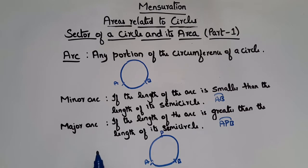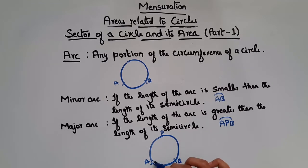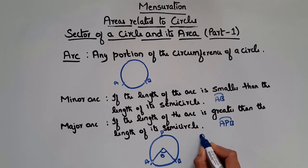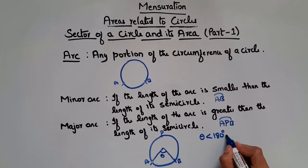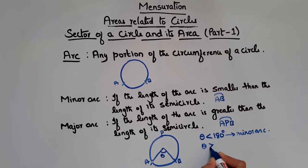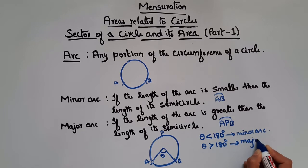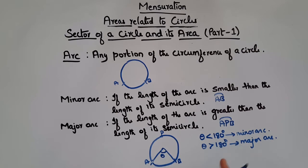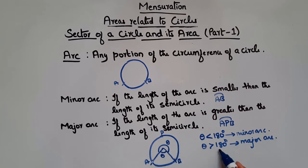This minor arc and major arc can also be defined in terms of theta, where theta is the angle subtended by an arc at the center. If you see arc AB, the angle subtended at the center is this angle. So if theta — the angle subtended by the arc at the center — is less than 180 degrees, then it is a minor arc. Similarly, for arc APB, the angle subtended is greater than 180 degrees, so arc APB is a major arc.